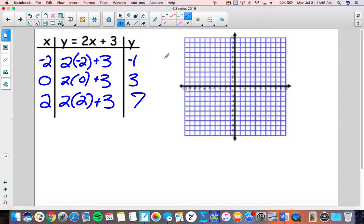And then we substitute in two for x. So two times two plus three, you get seven. So here's where we look for a pattern. When I go from negative one to three, I have to add four. When I go from three to seven, what do we have to add? Yes, we have to add four.